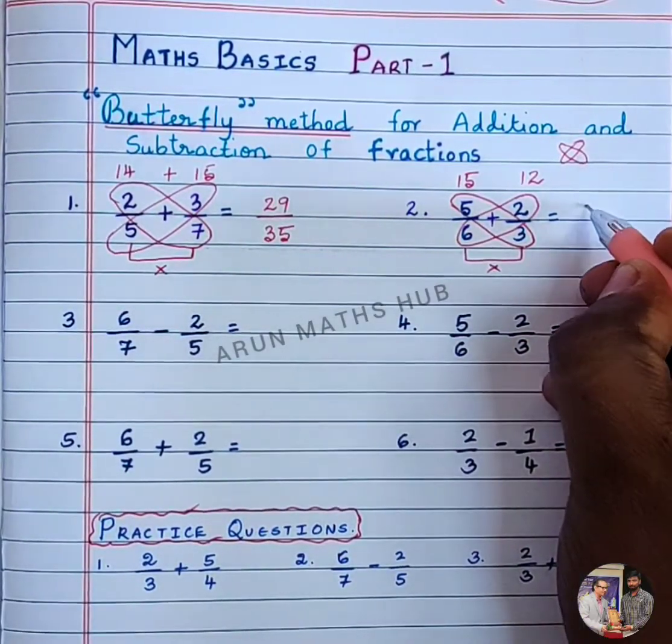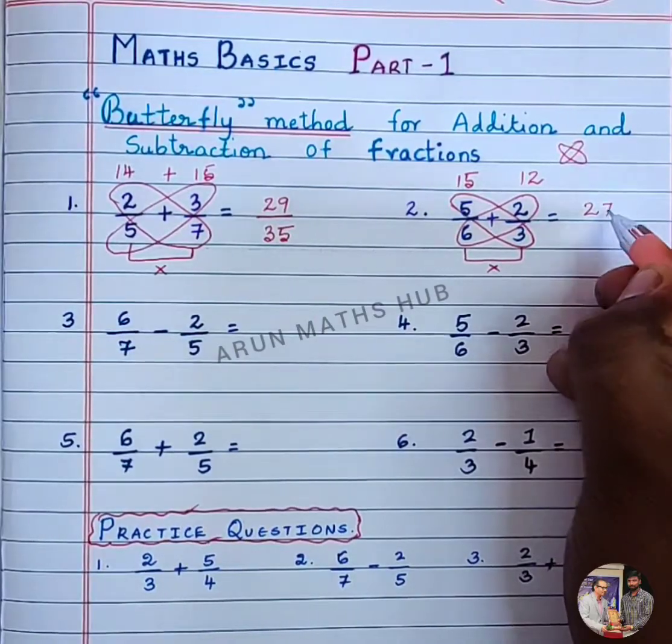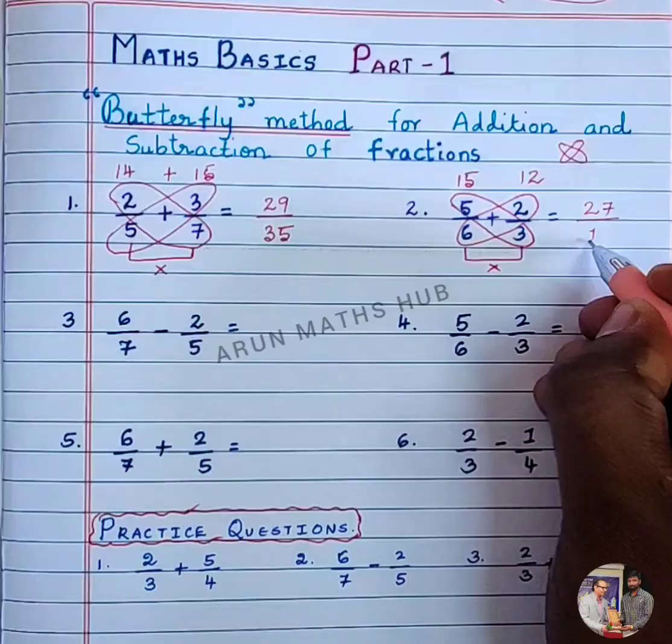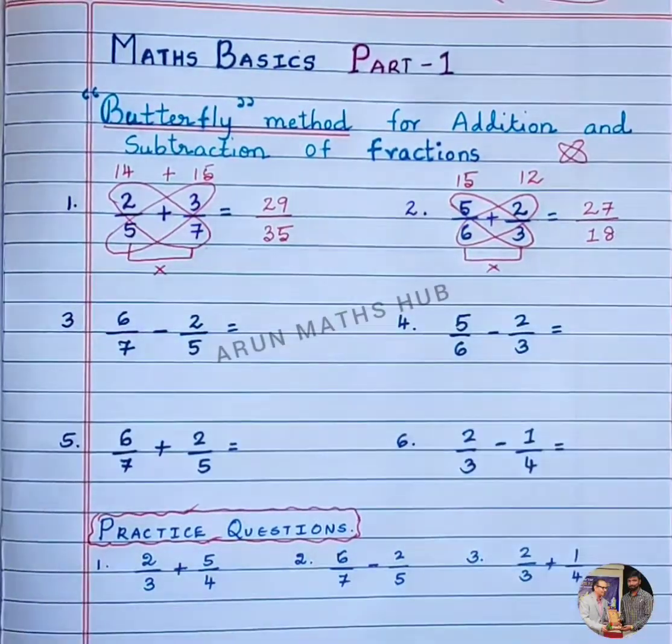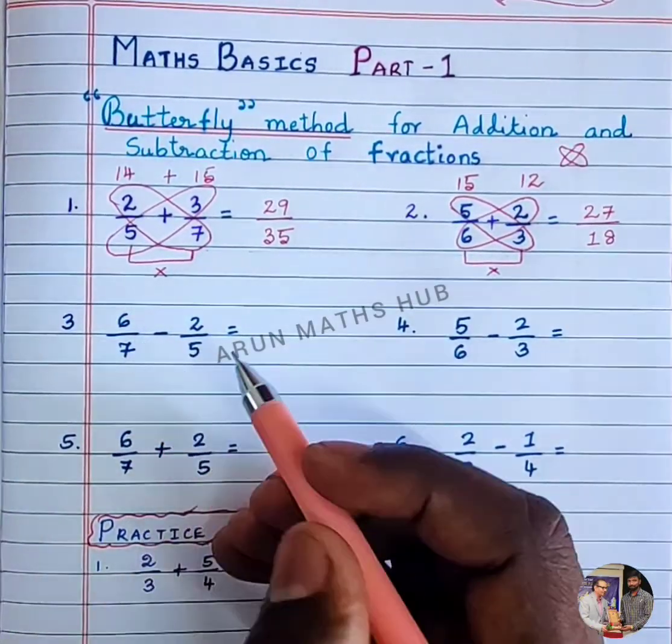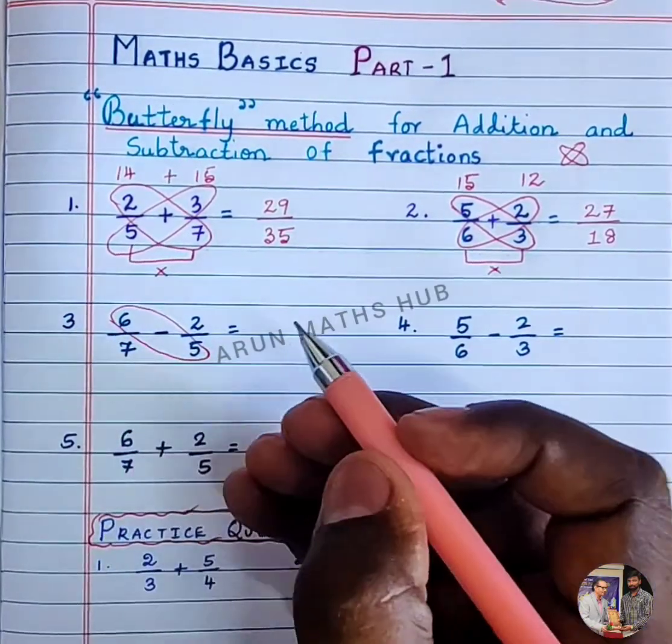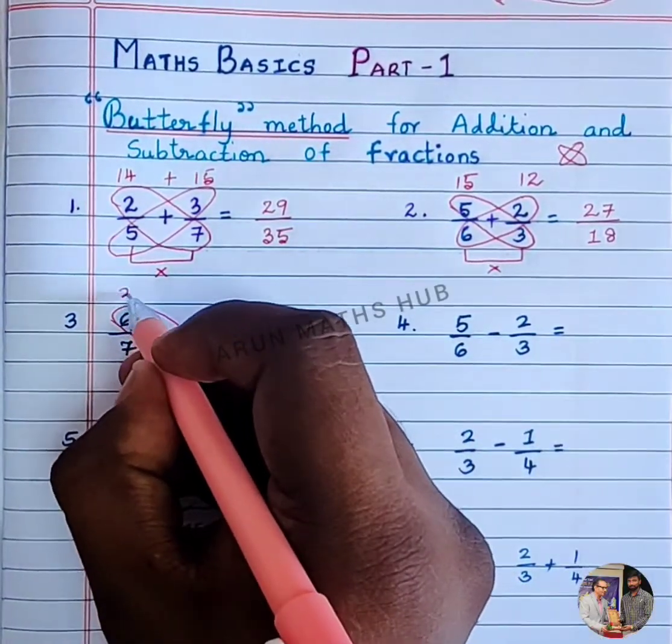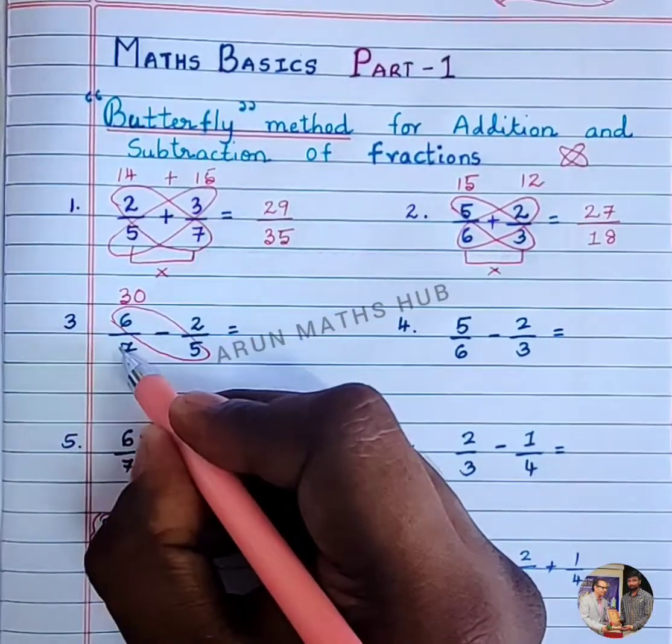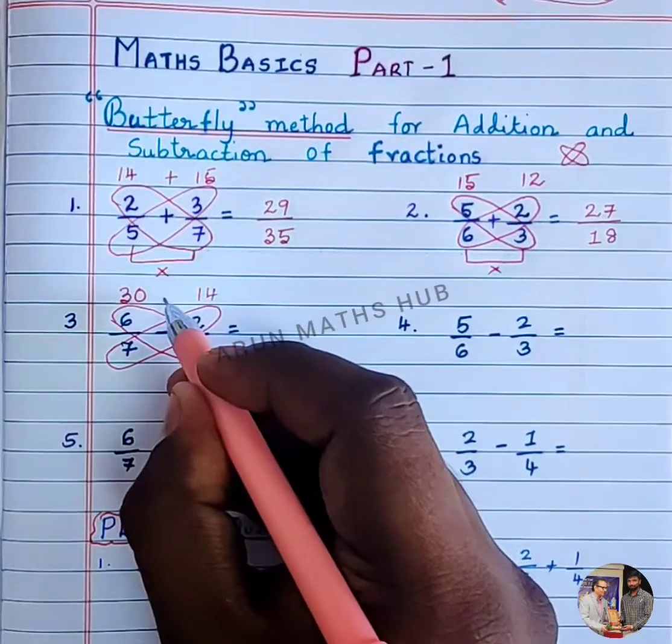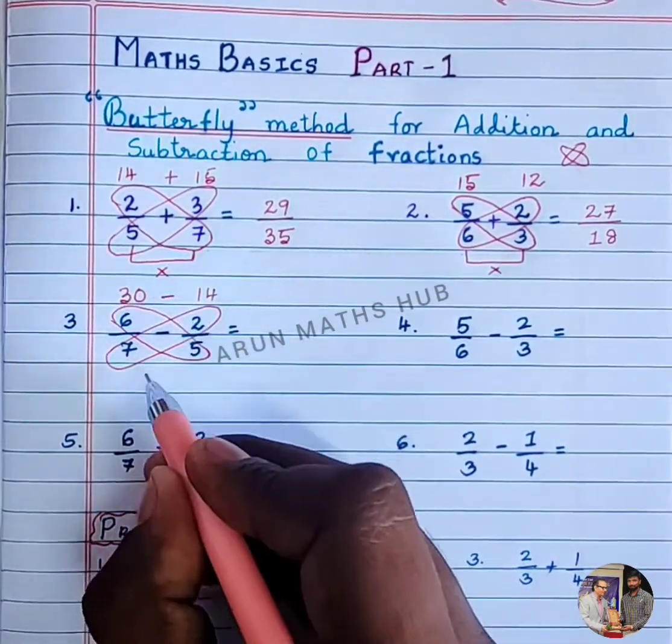you need to multiply. 6 into 3: 15 plus 12 is 27, and 6 times 3 is 18. Next, subtraction. We'll see: 6 into 5 is 30 and 7 into 2 is 14. We have a subtraction symbol here, so we will subtract.